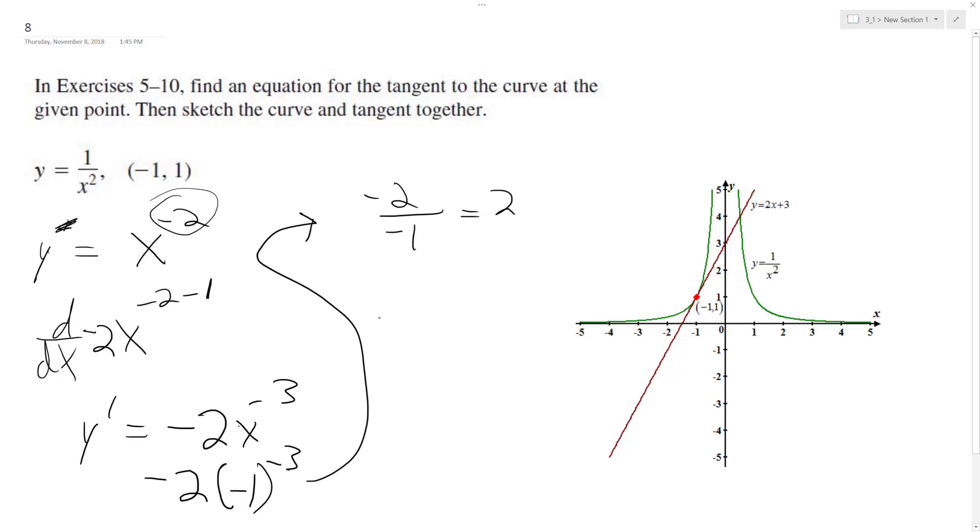Use our point-slope form, so y minus 1 is equal to 2 times x minus a negative 1, so plus 1. Y minus 1 equals 2x plus 2. Add one to both sides, we end up with the tangent line of y is equal to 2x plus 3.